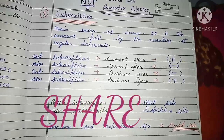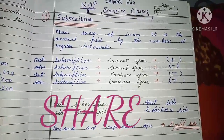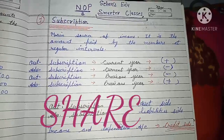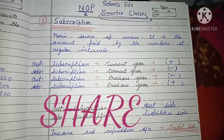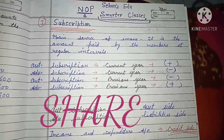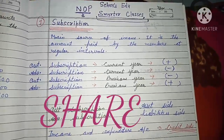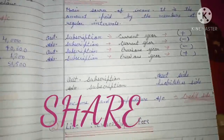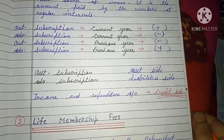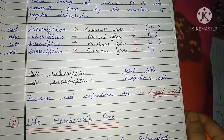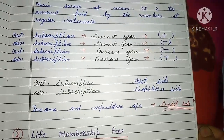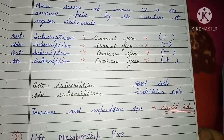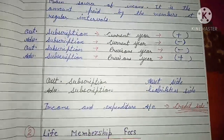The outstanding subscription is a plus and the advanced subscription is a minus. The outstanding subscription is an entry on the asset side, and the advanced subscription is an entry on the liability side. The income and expenditure account records it on the credit side.